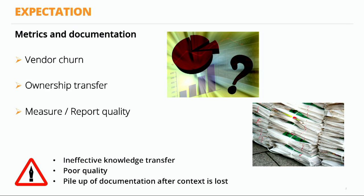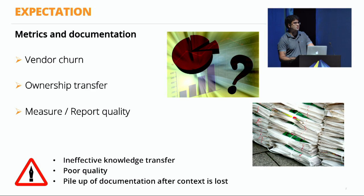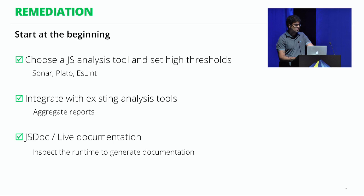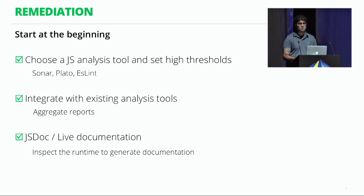There is an expectation for documentation. Without metrics or tools that give us metrics on code quality, you end up with poor quality — and the most boring thing is having to write a lot of documentation at the fag end when context is lost. To remediate this, start right at the beginning and do not let it pile up. Choose a JavaScript analysis tool such as Plato, Sonar, or ESLint and set good thresholds for your code quality. These tools can analyze cyclomatic complexity, duplication, structure, and cleanliness of your code.